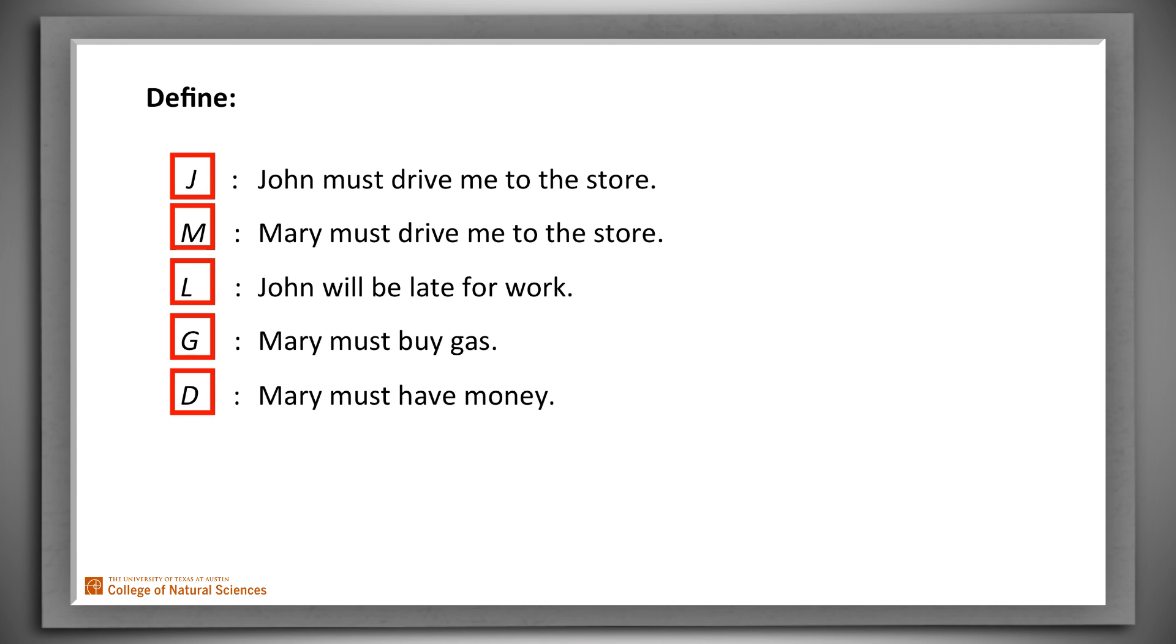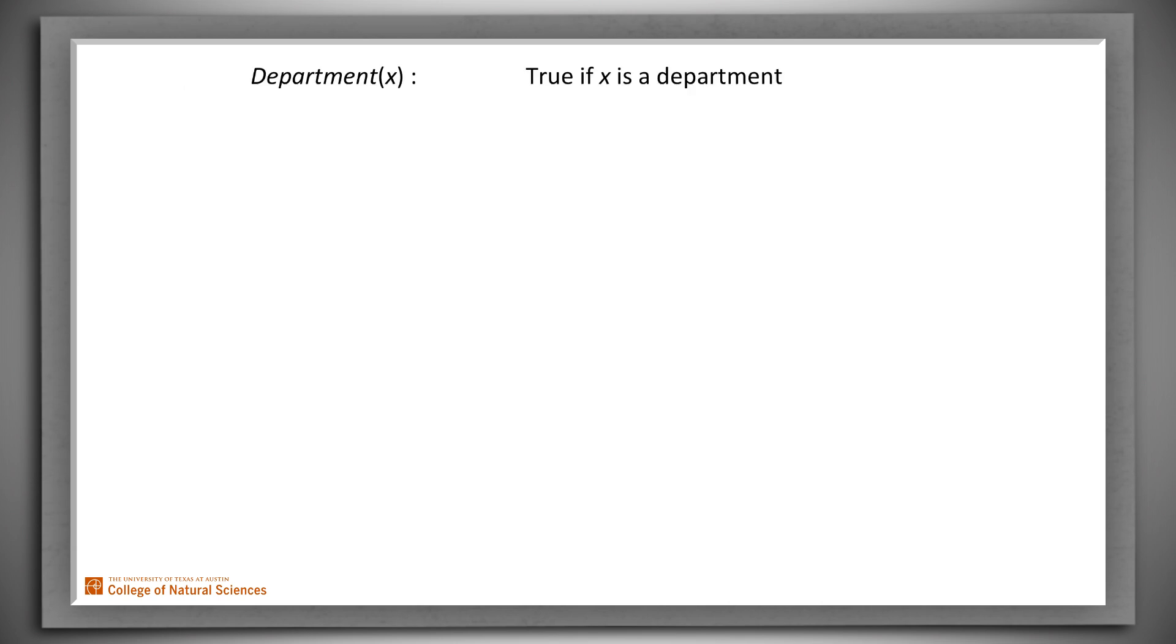Predicates, functions, objects, and variables. Let's look at some simple predicate definitions. We'll define Department to be true of any value x if and only if x is in fact a department. Notice that this definition is stated in a way that makes sense to us, people. Just as in the case of Boolean logic, the way we make the definition useful to our logical reasoning engine is to assert premises about departmenthood. So let's enter a few.